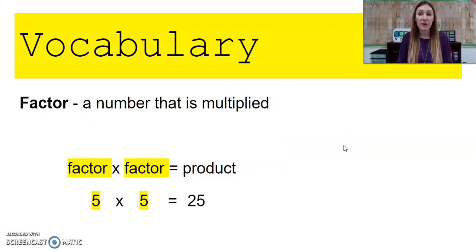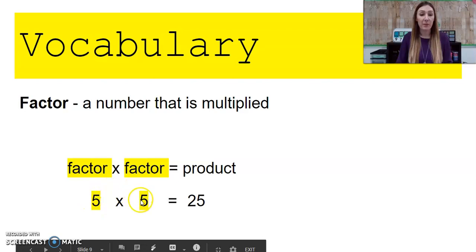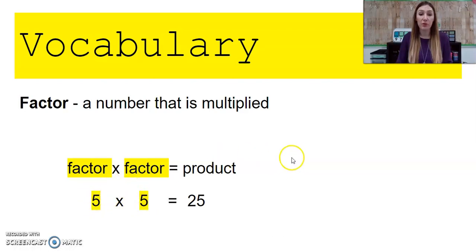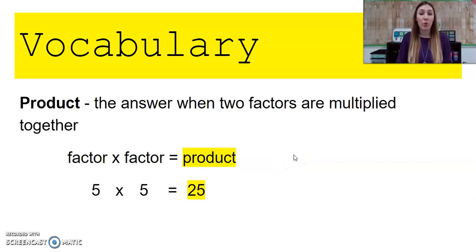A factor is a number that is being multiplied, so a factor times a factor gives us the product. In this example, the 5 times the 5, both of those 5s we call them factors, they're being multiplied together. When we get our answer, this is called a product, it's the answer when two factors are multiplied together.